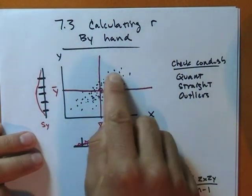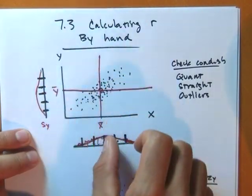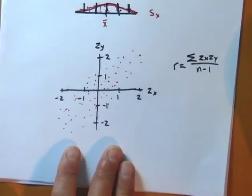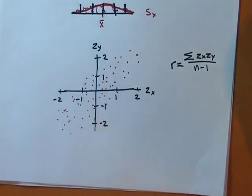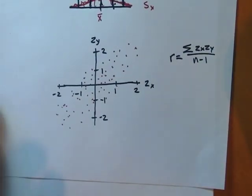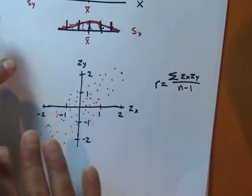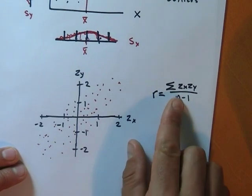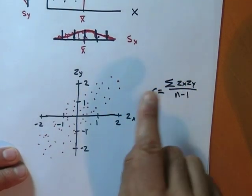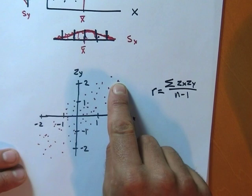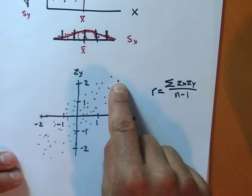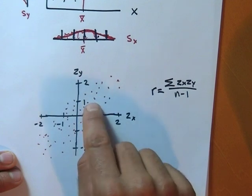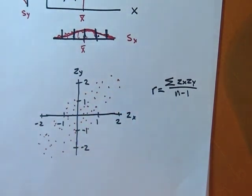We figure out z's for y and z's for x, and re-plot them on a z-axis. The r-value is calculated by taking the product of each zx and zy and adding them together. So I ask each coordinate: what's your zx, what's your zy? Multiply them, then add all those products together. I'm multiplying the z-score coordinates by each other for each x-y pair.